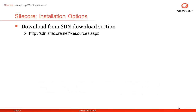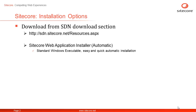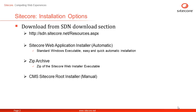Sitecore provides three options to download and install the product. The first option is the Sitecore Web Application Installer — a standard Windows executable that makes it easy to quickly install and configure Sitecore Customer Engagement Platform while automatically configuring many options. The second option is a zip archive, which is simply a zip of the Web Application Installer to allow download over firewalls and antivirus where exe download is not possible. The third option is CMS Root, which contains the files to manually install and configure Sitecore Customer Engagement Platform.